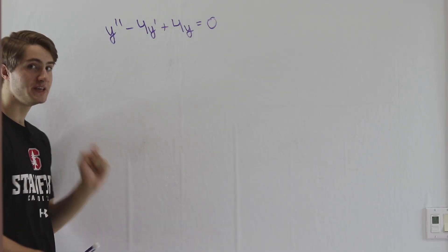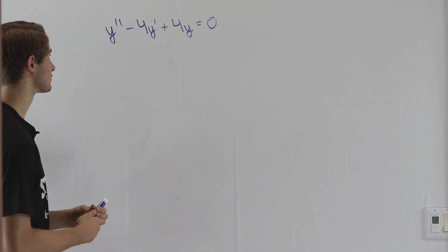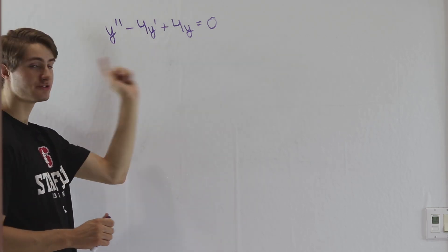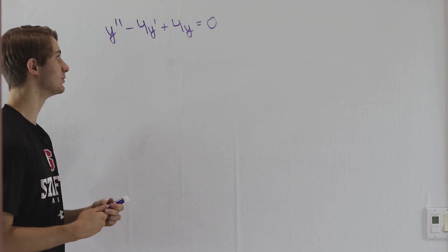So we are going to talk about how to deal with repeated roots in homogeneous differential equations. And to start out, let's consider the equation y double prime minus 4y prime plus 4y equals zero.